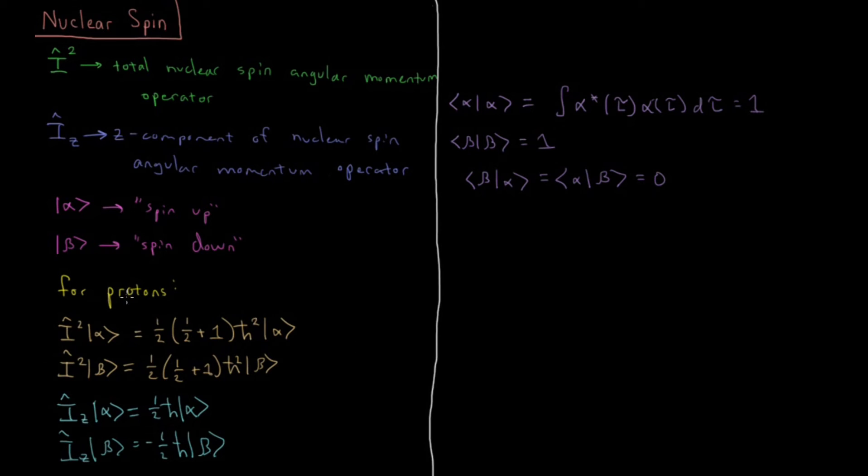This is specifically for protons, but this is actually true for all spin 1/2 nuclei. I'm going to make a list here of some common spin 1/2 nuclei - nuclei that have a total nuclear spin angular momentum quantum number of 1/2.